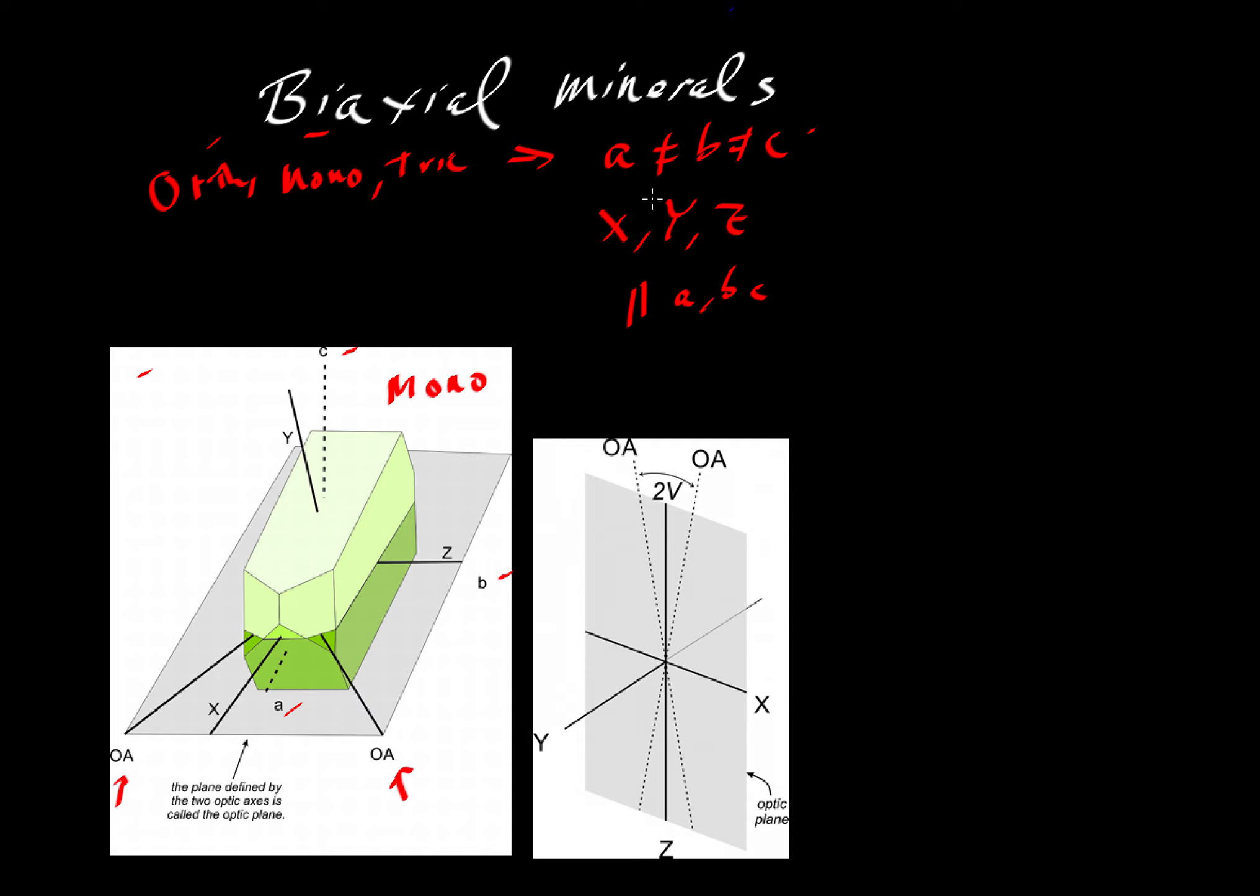It could be parallel to A or B or C, and then Y could be parallel to any other three, et cetera. For the monoclinic and triclinic systems, we're going to have these angles. The Z crystallographic direction will be parallel to B, but X and Y can switch places, and they will have some angle.